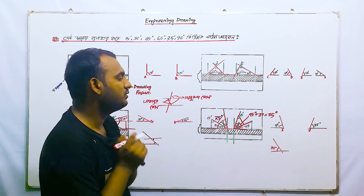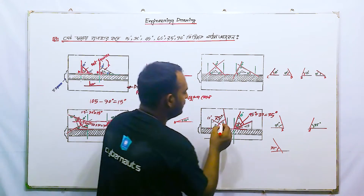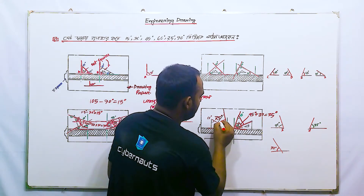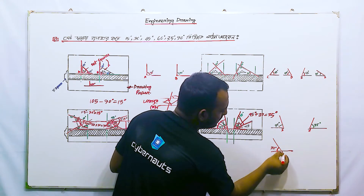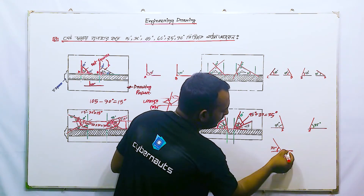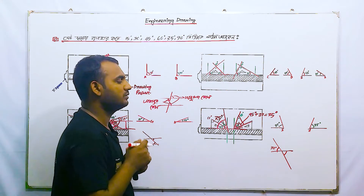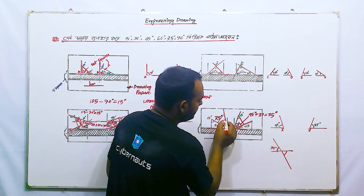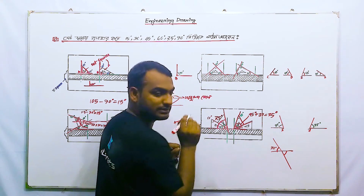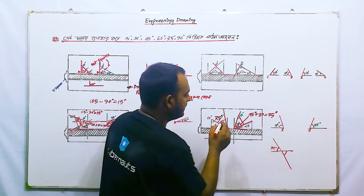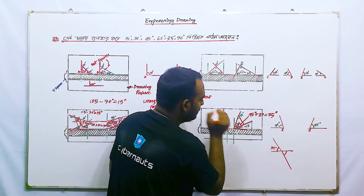Now, we have a 45-degree angle. We have a 45-degree angle draw. We have a 75-degree angle. We have a 75-degree angle. We have a point.